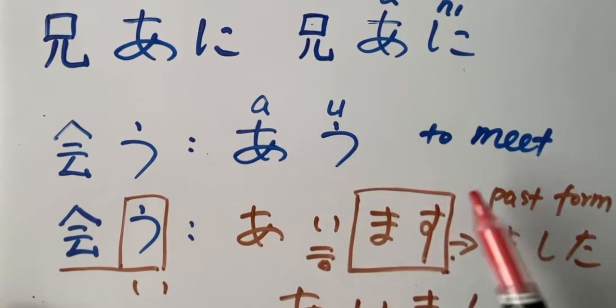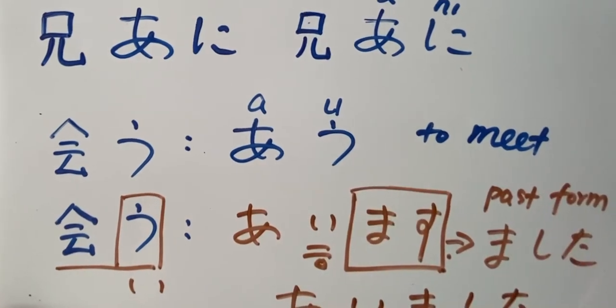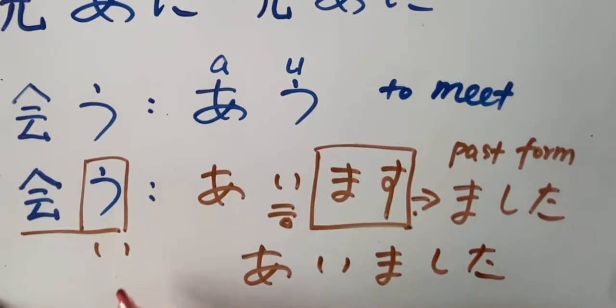Au. To meet. To meet. And then we have our polite form, aimasu. Past form, aimashita.